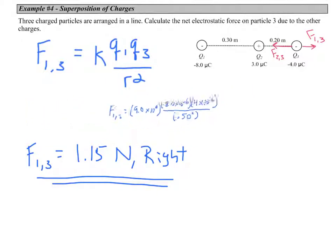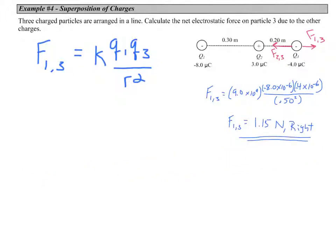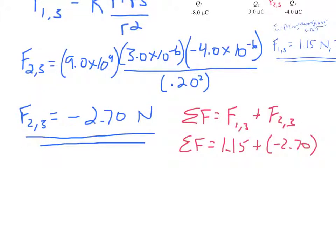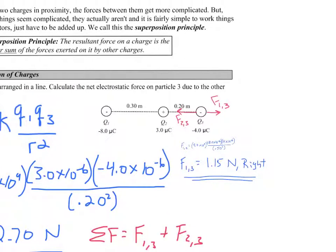Now let's look at force of two on three. Force two on three ends up being negative 2.7 newtons. That negative sign simply means it is an attractive force between Q2 and Q3, so it points to the left. Adding these as vectors, we get a net force of negative 1.60 newtons, directed to the left, which is just what we predicted in our free body diagram.